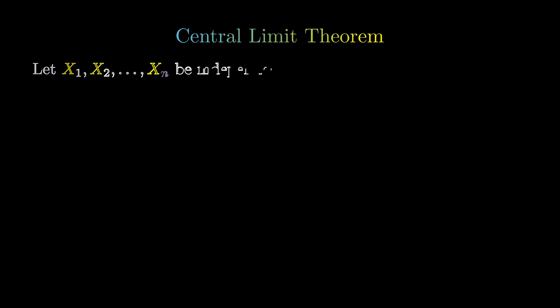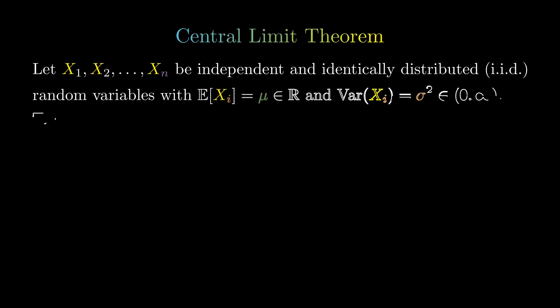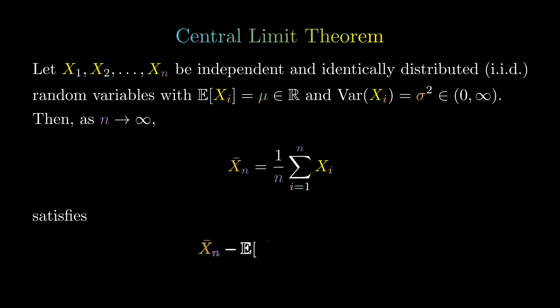Given a sequence of independent and identically distributed random variables X sub i with expectation mu and finite, non-zero variance sigma squared, the sample mean satisfies that its standardization converges in distribution to a standard normal.